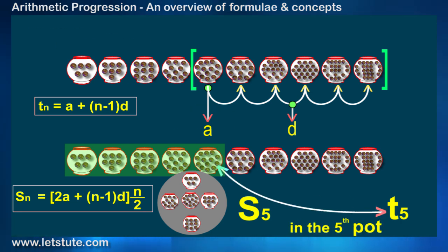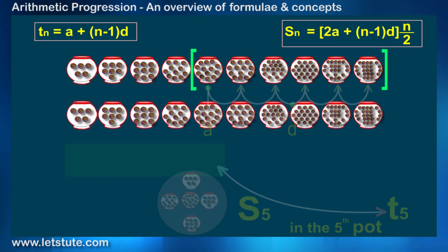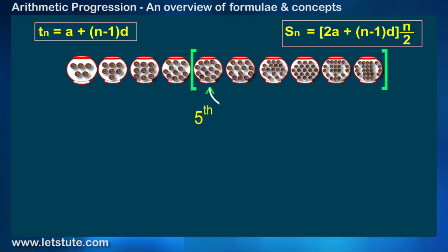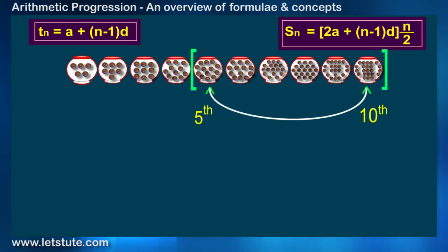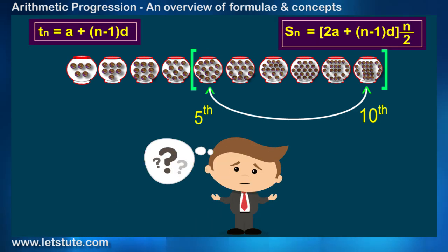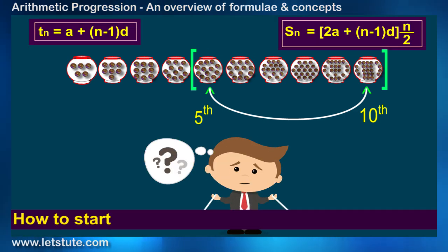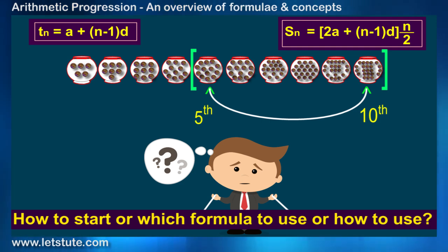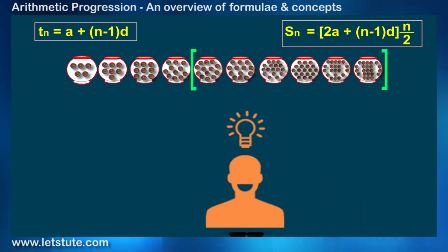If you have understood till now, then tell me the way you would find the total number of marbles from 5th to 10th pots both inclusive. Only 2 formulae but still confused. Is your confusion how to start or which formula to use or how to use? Probably you have all 3 doubts, right?